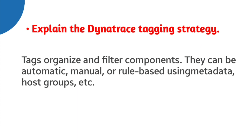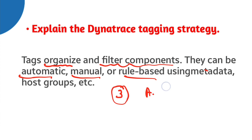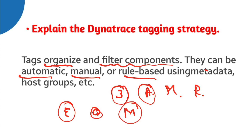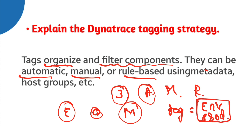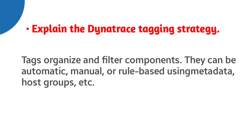Next: explain Dynatrace tagging strategies. Tags play a very important role in Dynatrace — they are used to organize and filter components. There are three methods for creating tags: automatic, manual, and rule-based. Tags are used when enabling maintenance mode, creating problems, or inside management zones. For example, if you want to enable maintenance mode only where the tag environment equals prod, you can set that criteria in maintenance mode and apply it accordingly.